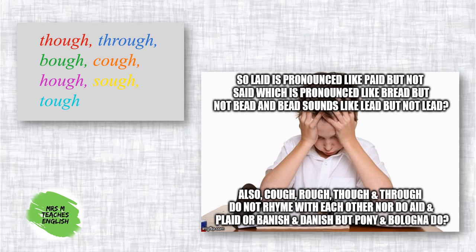English can appear confusing to its users. Take a look at the words on the left — every one of them ends with O-U-G-H, but each one is pronounced differently. Have a go! So, listen as I say them: though, through, bough (another word for the branch of a tree), cough, hock (part of a horse's leg), sore (as in I have a sore throat), and tough.